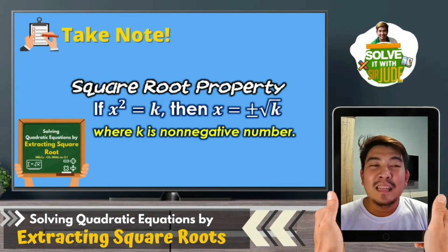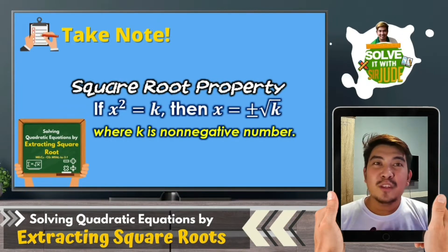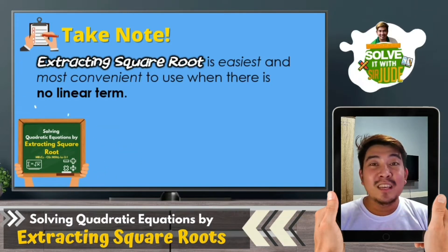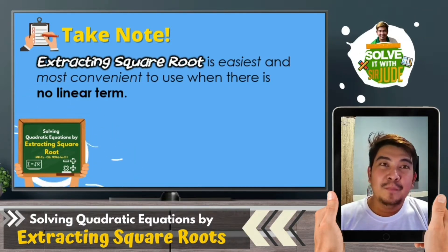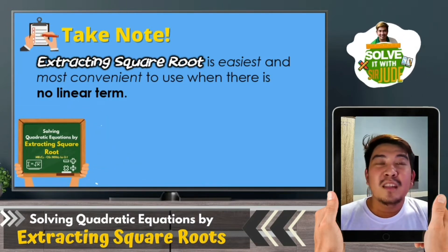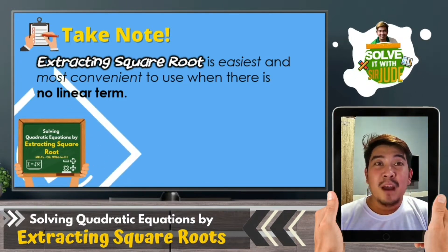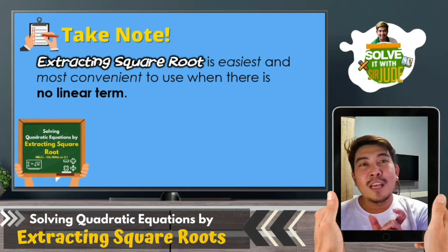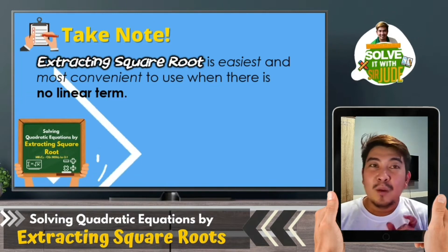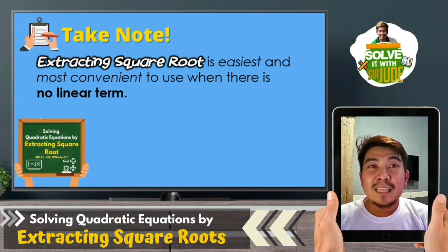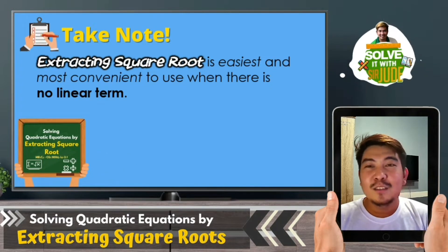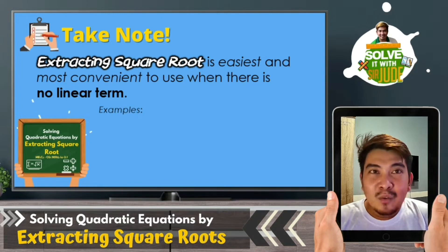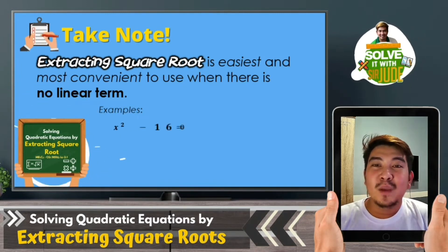So when can we use solving quadratic equations by extracting square roots? It is most convenient and easiest to use if the linear term is missing. If you can recall, the standard form of a quadratic equation is ax squared plus bx plus c equals zero. The bx is our linear term, so when there is no bx — no linear term — we can use extracting square roots. Here are some examples of quadratic equations where we can use extracting square roots.